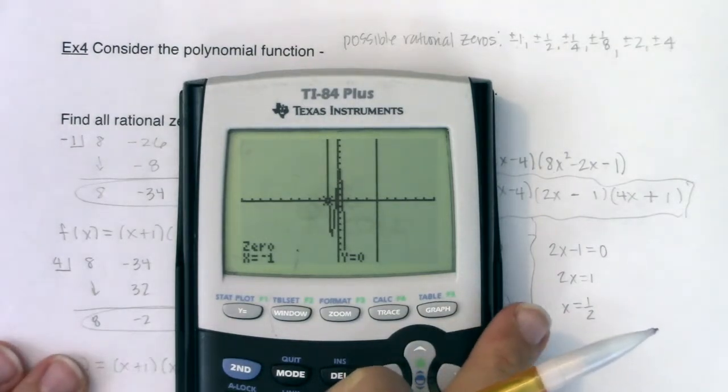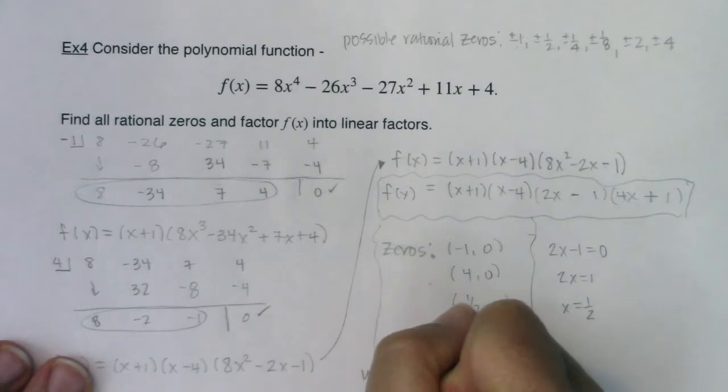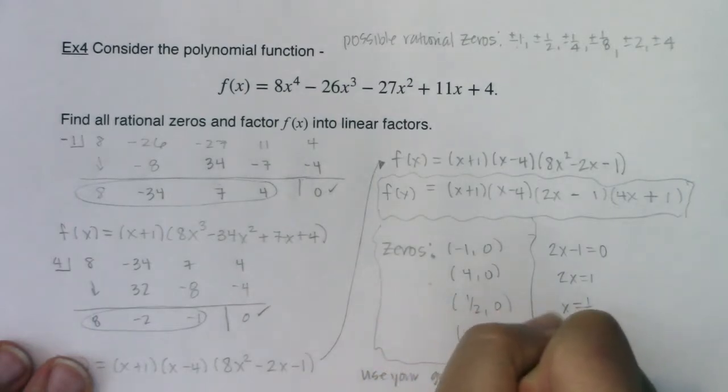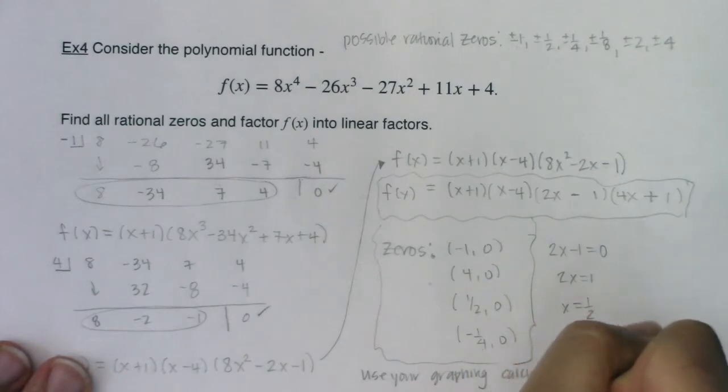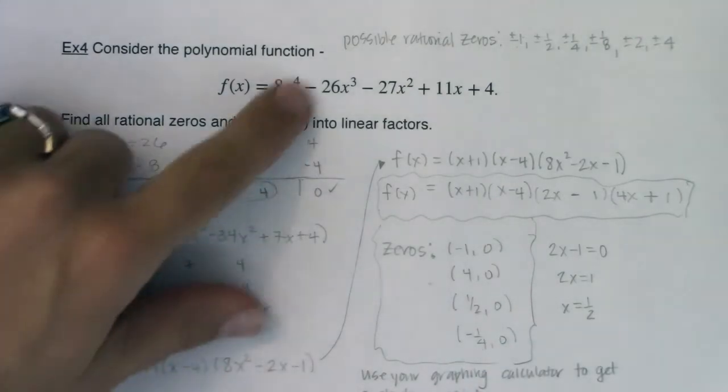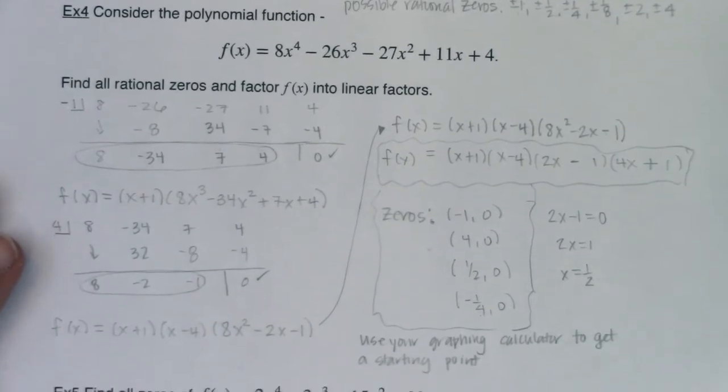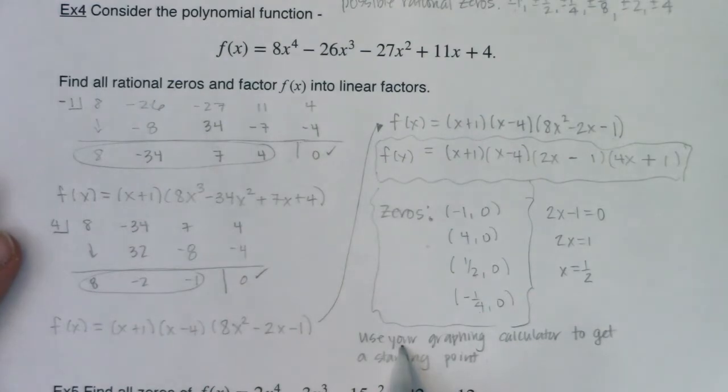So again, I would always recommend use your graphing calculator to get a starting point. You can list all of the possible rational zeros, and that's fine, but you're also going to use technology to help you get started. So with that, you can see we've got a pretty nice looking function in example five, so I'm going to hit the pause button, and when we come back, we're going to do a gigantic quartic all from scratch. I'll see you in a bit. Bye.